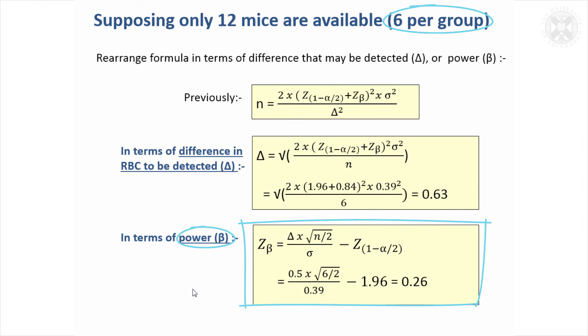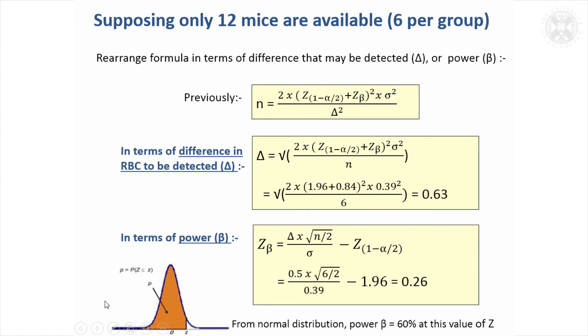By turning this around a bit, we can get the value of Z that would be appropriate to that size of study and that difference, and it comes out to be 0.26. So that's the value of Z we'd have to go back to the normal distribution to find out what probability, what power, that represented. For that value of Z, 0.26, it's going to be quite a bit lower now—what's the area here?